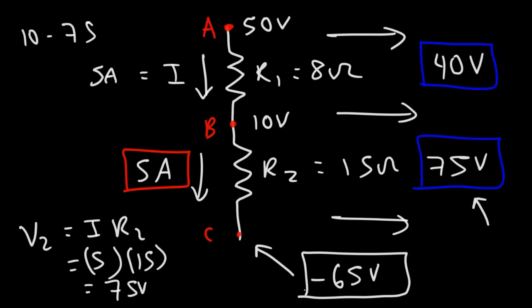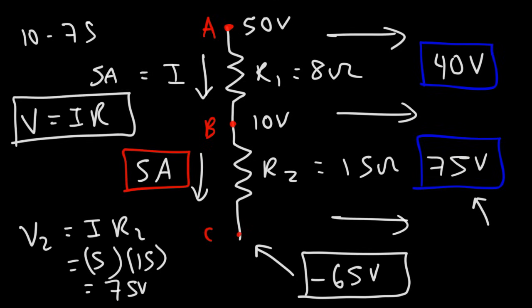That's basically it for this video. Now you know how to calculate the voltage drop across a resistor — you need to use Ohm's law, V equals IR. You need the resistance value and the current flowing through the resistor; multiply those two together and you get the voltage drop. Thanks for watching, and don't forget to subscribe.